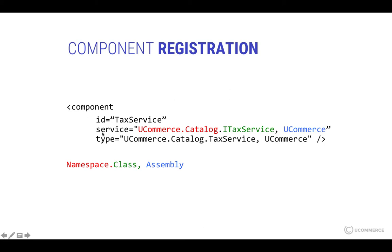The service piece of the component tells uCommerce the interface it should be aware of — the first bit is the namespace, the next is the actual type (in this case the interface), and the final bit is the DLL. Generally we don't change this unless we're registering a completely new component. In most cases you'll just leave it in place and work with the type instead, because the type is the actual implementation of that interface. Again we have the namespace and the type — a class that sits in one of the uCommerce DLLs.